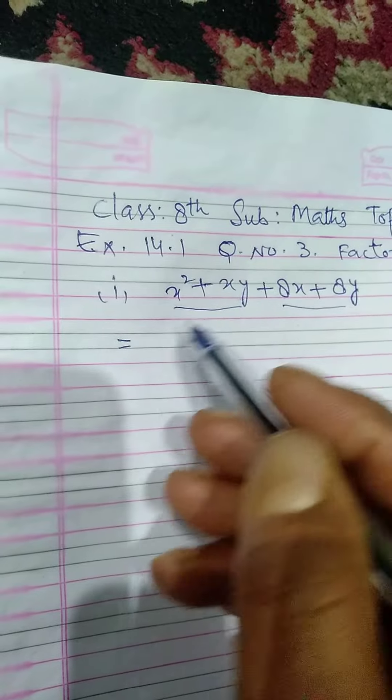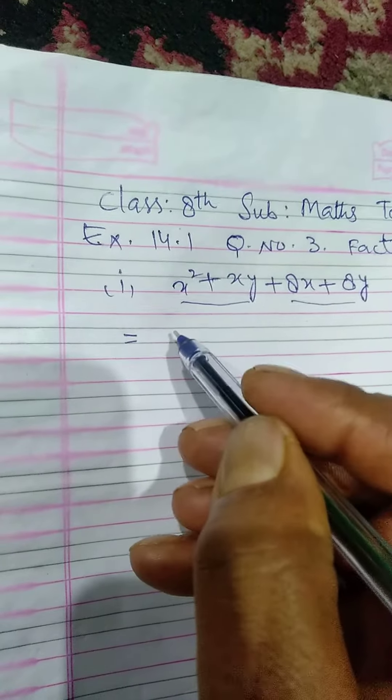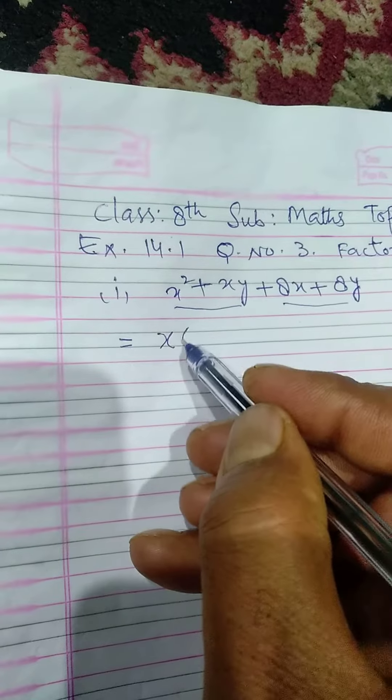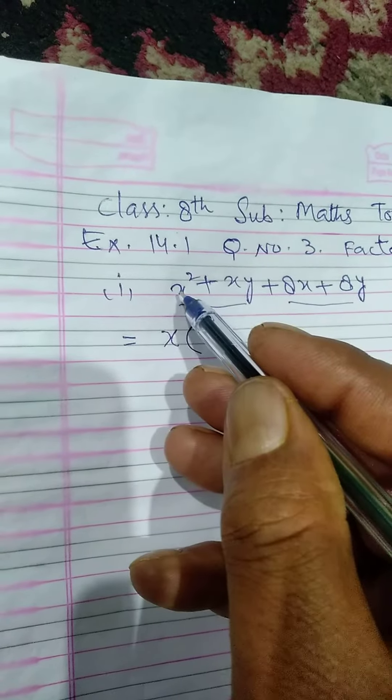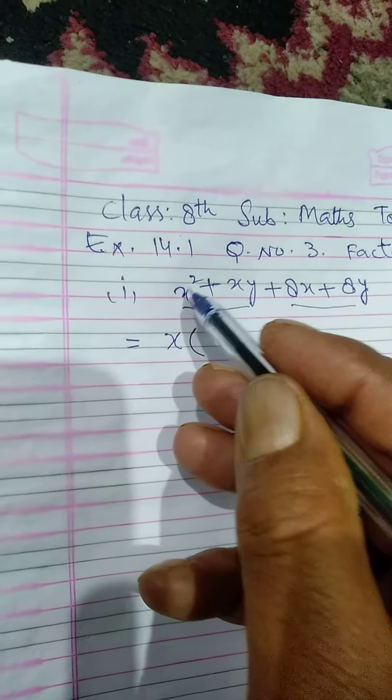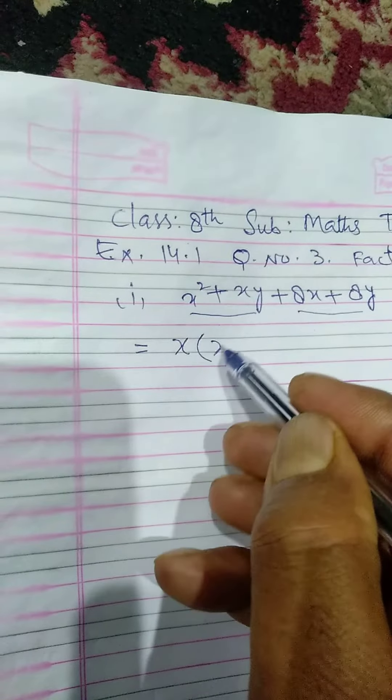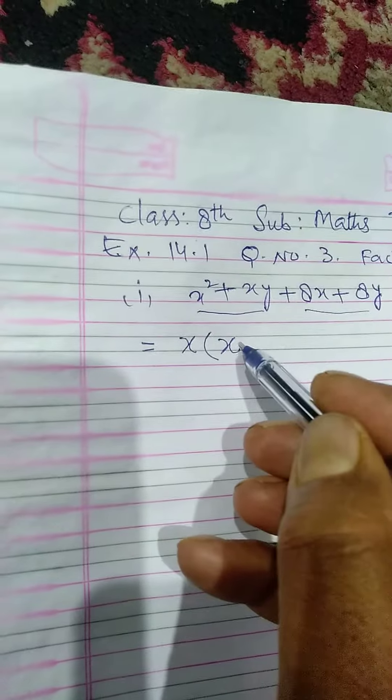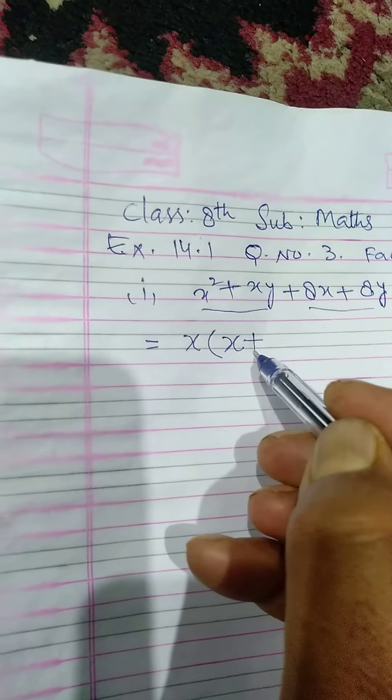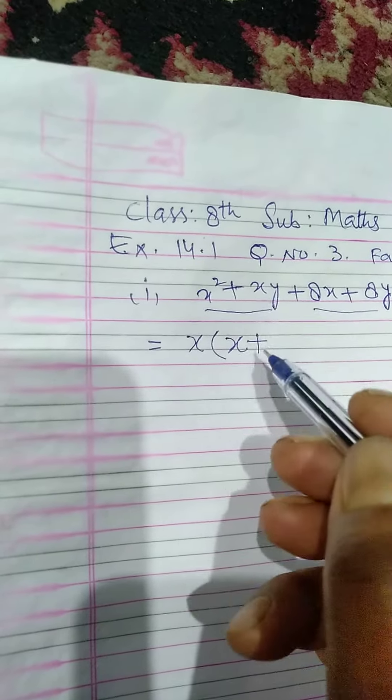So x should be taken out this way. In x² we have two factors, x and x, so one x is here. In the bracket next will be xy. We keep this x out, we left here only y.